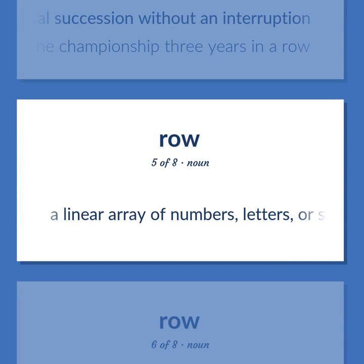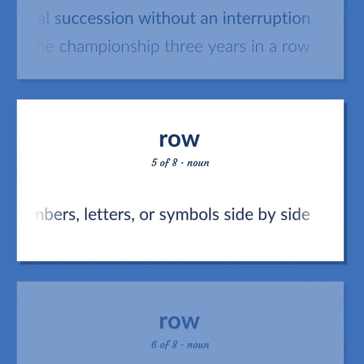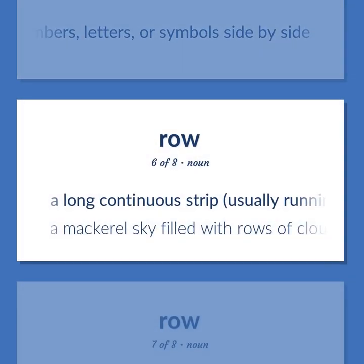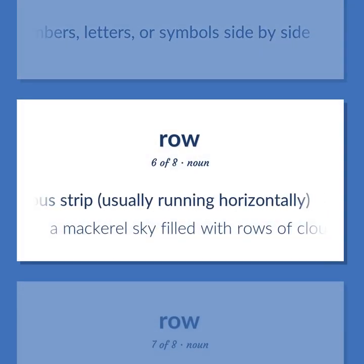A linear array of numbers, letters, or symbols side by side. A long continuous strip, usually running horizontally. A mackerel sky filled with rows of clouds.